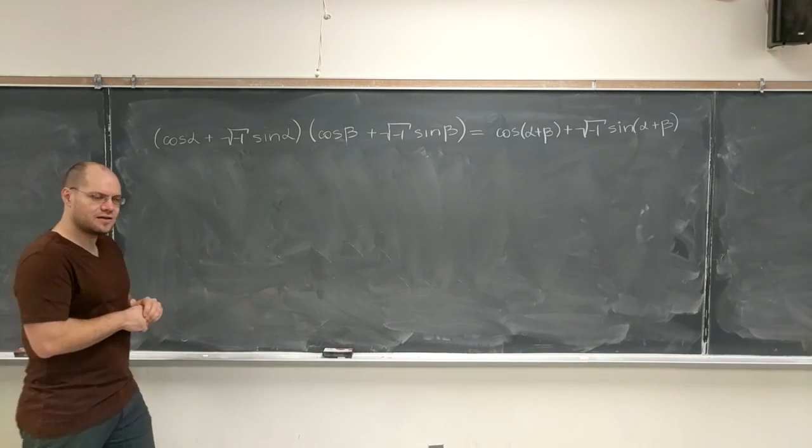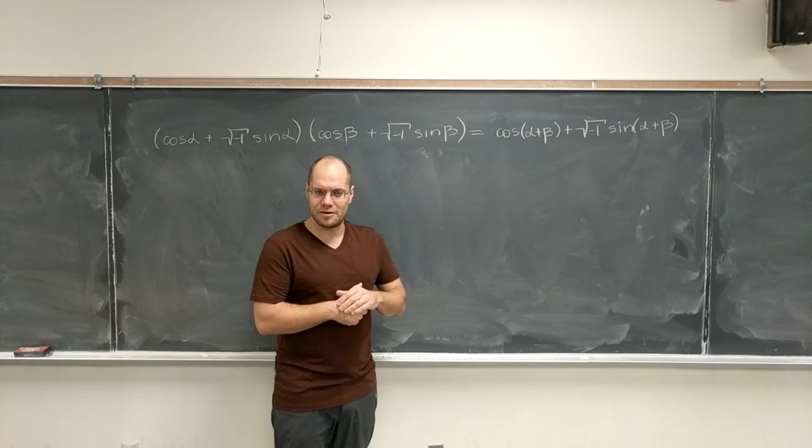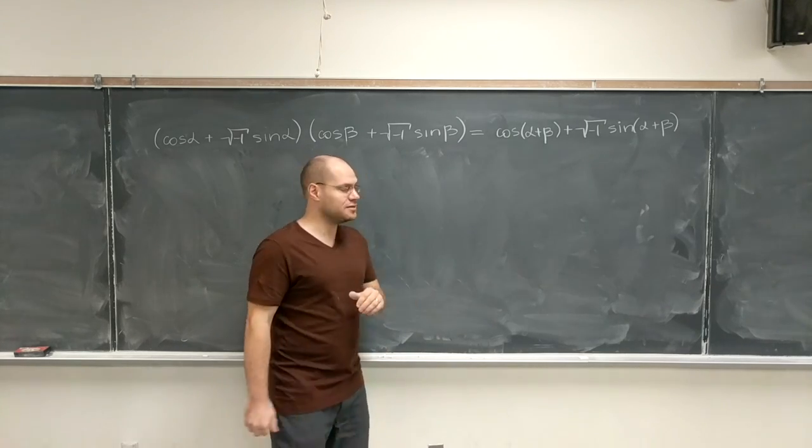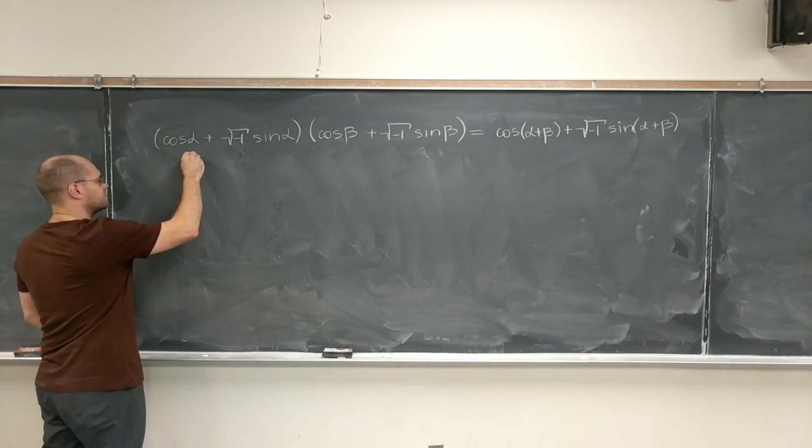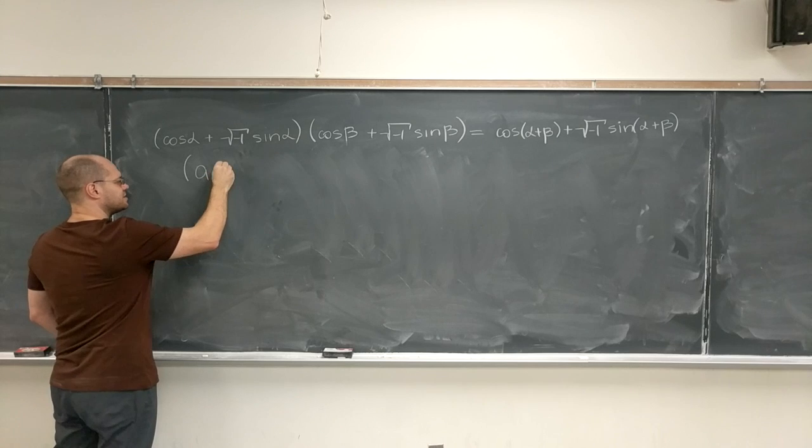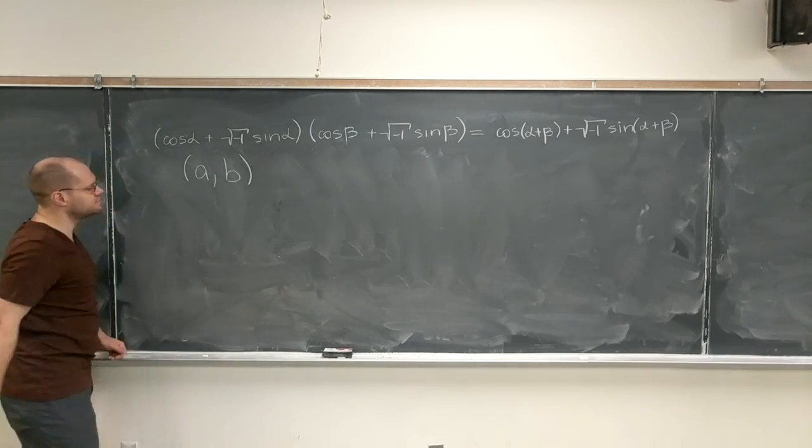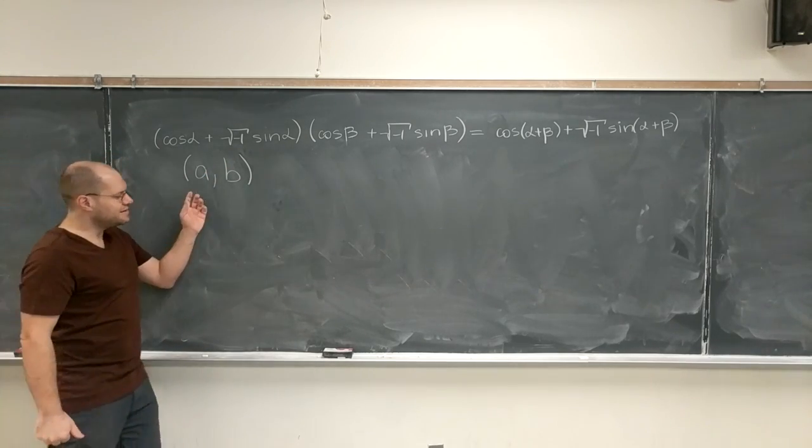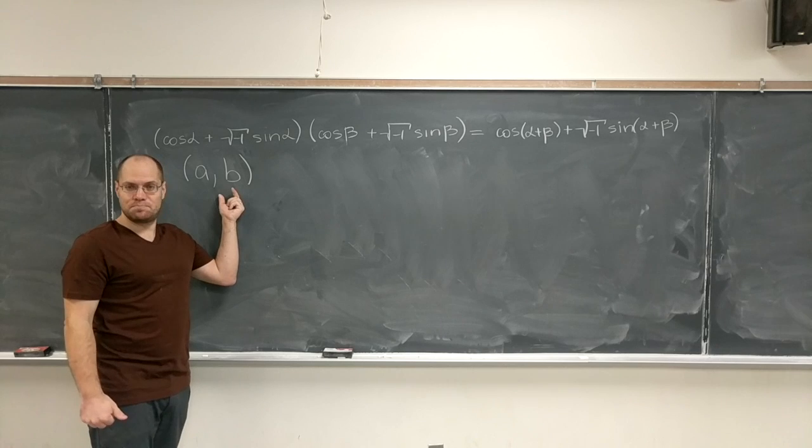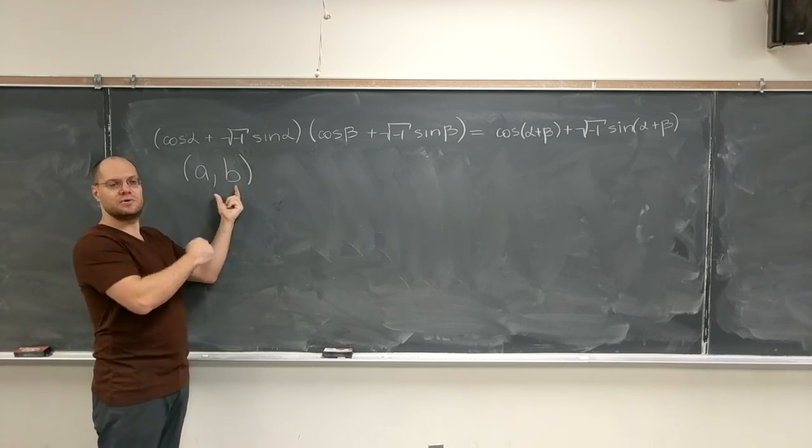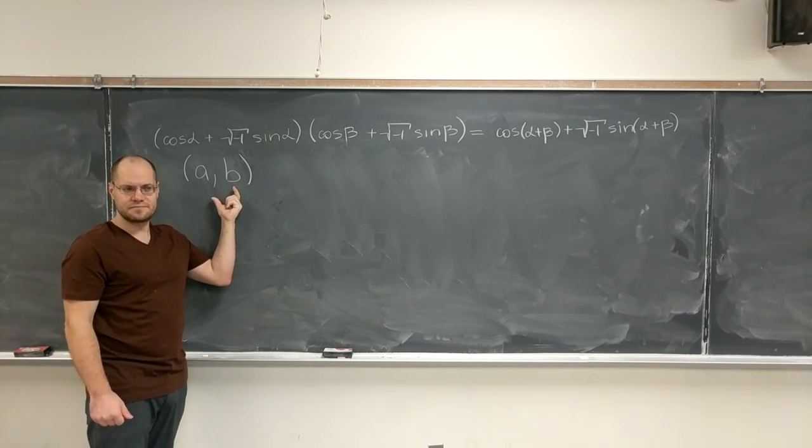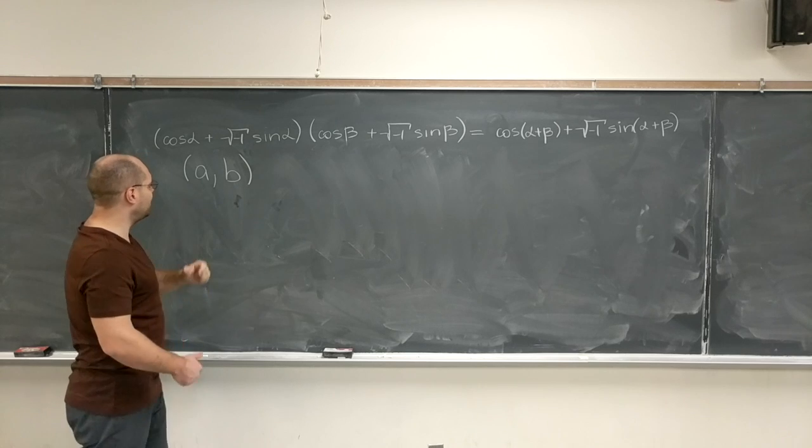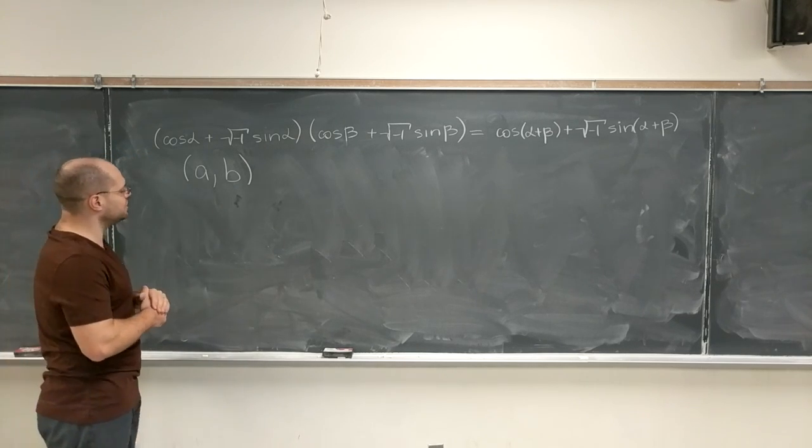But here's what he said. A complex number is a pair of reals, a couple of real numbers. Here is a complex number, and we will write them thus. Yes, this represents a plus bi, but in this way we don't even need to write i. We will now think of complex numbers as pairs of real numbers.